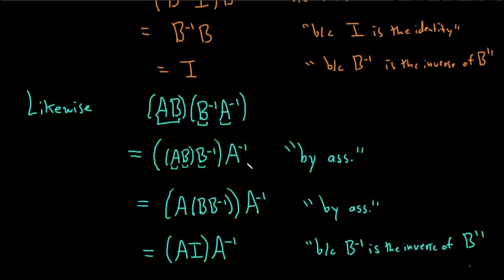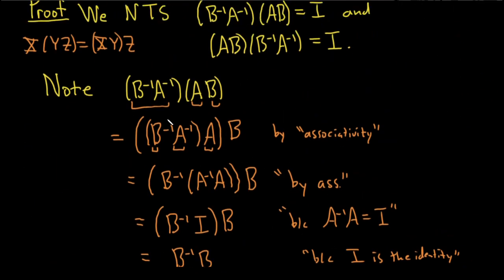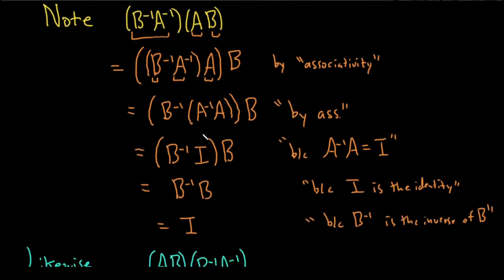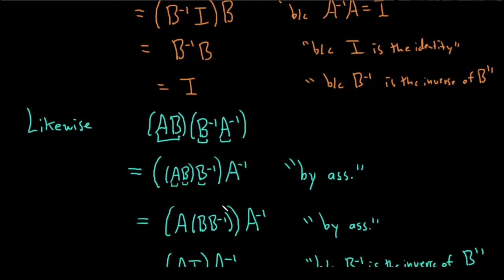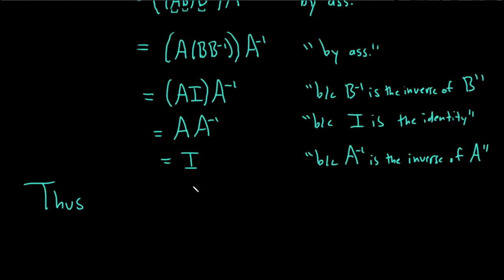So we've showed both directions. We've showed that if we take B inverse A inverse times AB, the result is the identity matrix. And likewise, if we take AB times B inverse A inverse, the result is the identity matrix. Thus, we have that AB is invertible. And the inverse of AB is B inverse A inverse.